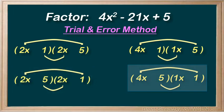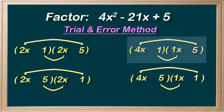Can we make a negative 21x out of a 4x and a 5x? No, I can't think of any way to make that work. On to the last option. Can we make a negative 21x out of a 20x and a 1x? Well, yeah, we could if they were both negative. We found a winner. Here's our factored solution.